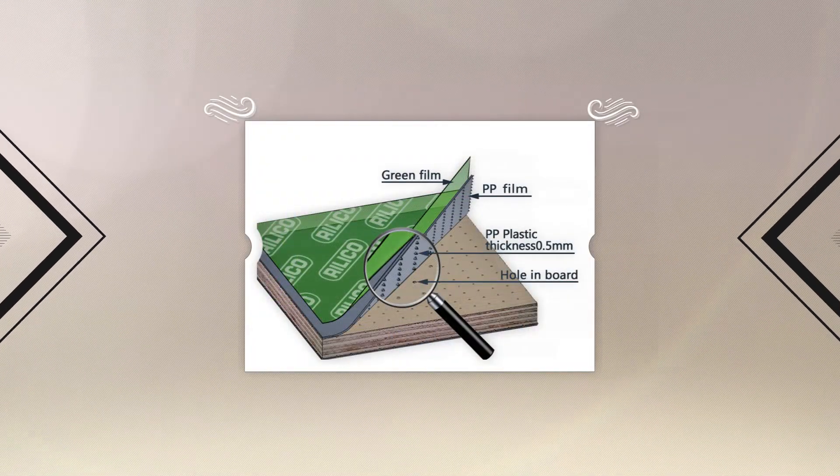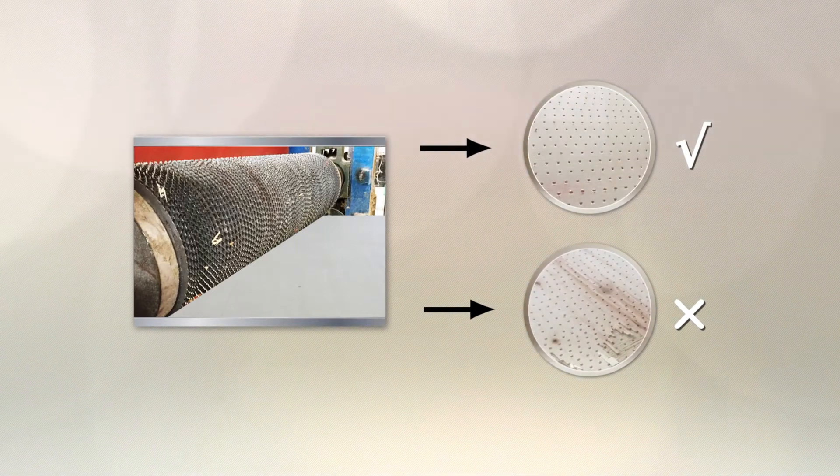we will first punch holes into the plywood, as this process will also test the strength of the plywood where we're able to pick out any defects.